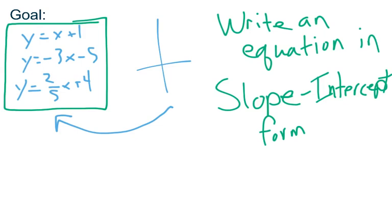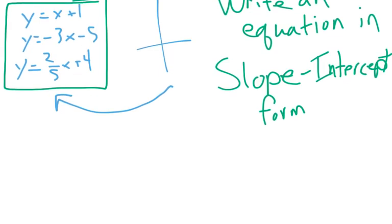But usually the goal is to write an equation in slope-intercept form. Slope-intercept form is y equals mx plus b. So what we need to do is find a few things. We need to find the y-intercept, and we need to find the m.